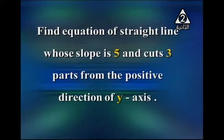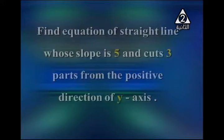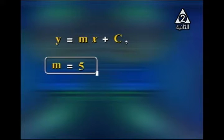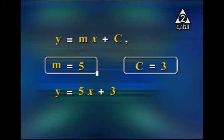Find the equation of the straight line whose slope is 5 and cuts 3 units from the positive direction of the y-axis. The general form is y = mx + c. The slope m = 5 and the y-intercept c = 3. By substituting, the equation is y = 5x + 3.